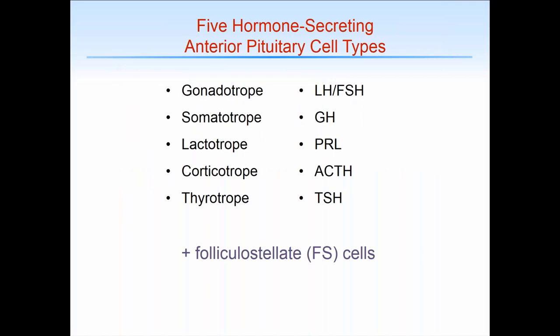Now we'll move to the anterior pituitary. As you know, there are five hormone-secreting cell types in the anterior pituitary which secrete six primary hormones: the gonadotropes, which secrete LH and FSH; somatotropes, responsible for biosynthesis and secretion of growth hormone; lactotropes, which secrete prolactin; corticotropes, which secrete adrenocorticotropic hormone; and thyrotropes, responsible for secretion of thyroid-stimulating hormone. There are also many other cell types within the anterior pituitary gland, including all the vascular structures.